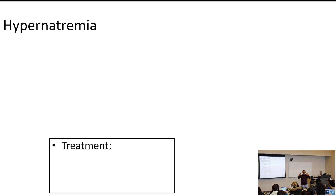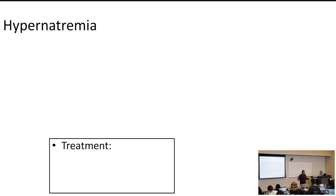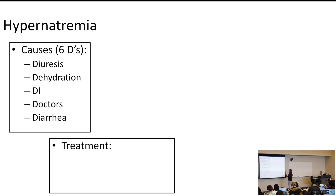Hypernatremia can be caused by losing too much volume. If you're losing too much volume, your sodium levels in your body go up — if you're losing a lot of liquid. So think dehydration, diarrhea.